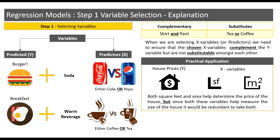But since both these variables help measure the same thing — that is, the size of the house — it would be redundant to take both. Hence I take square feet or area when predicting for house prices.